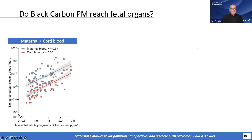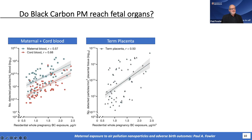So what did we find? Here is number of particles on the left axis and concentration of particles in the air on the bottom axis. Over those concentrations, maternal blood tends to have higher levels of black carbon particles than cord blood — essentially fetal blood at term. That's not surprising. And when we look at the placenta, we see the same kind of relationship. In fact, the rate at which the number of particles increases with increasing exposure is very similar between these three sets of tissues.